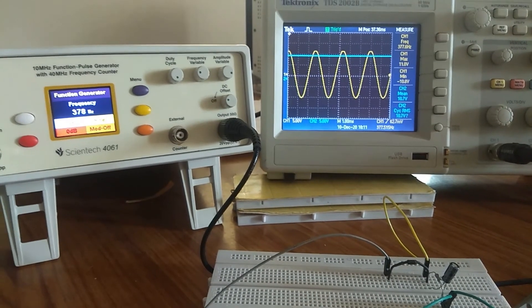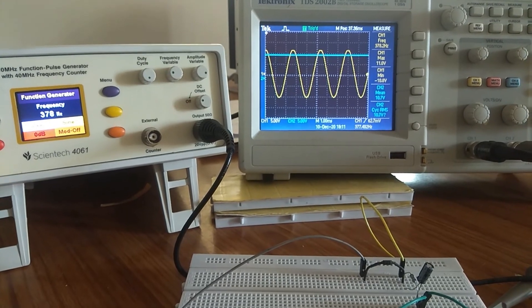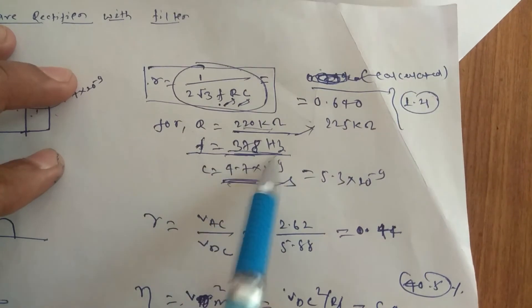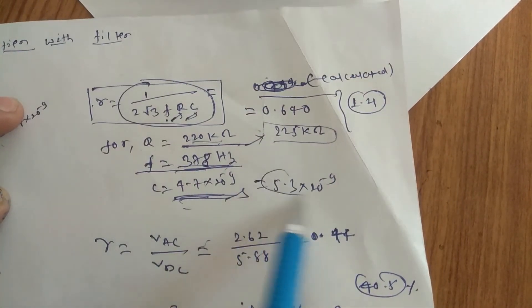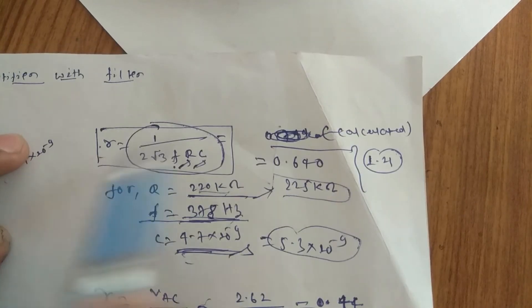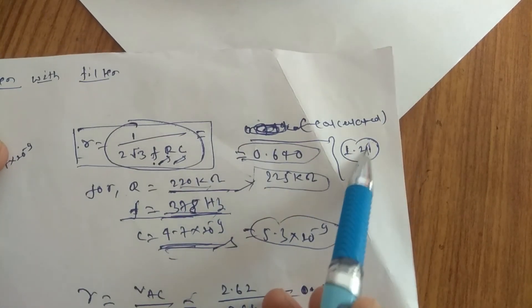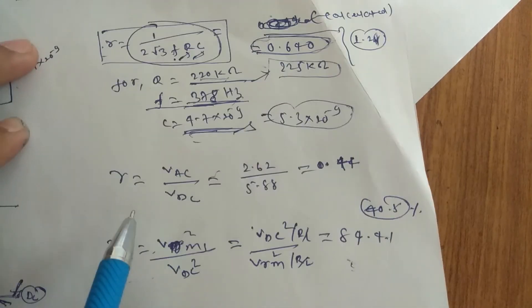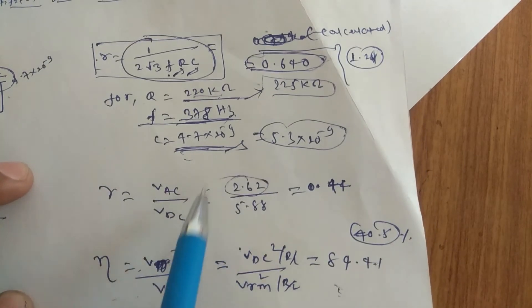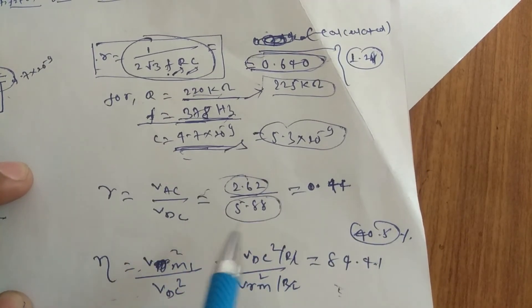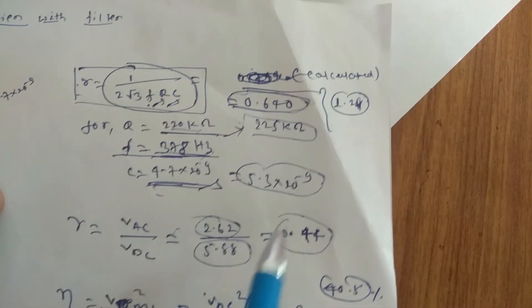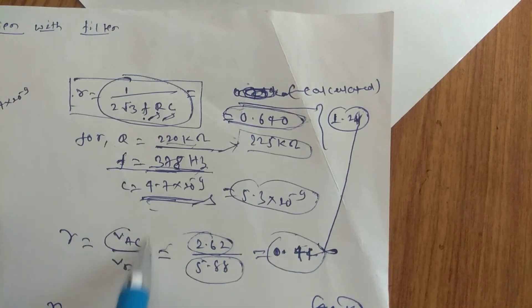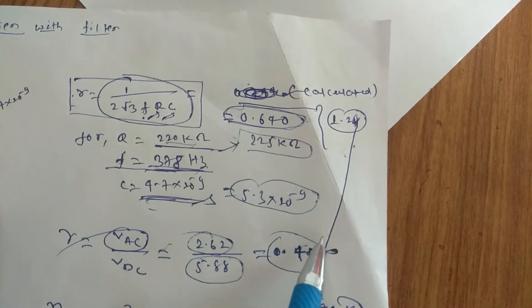This is all about the half wave rectifier with the filter. We have set the frequency to 378 Hertz. Actually with the rating, it was this one, but actually we got 225 kilo ohm and 5.3 nanofarad. By this formula, we calculated 0.64 and theoretically it was this one. Because of filter, it is coming to this one theoretically. But practically if you take VAC by VDC, VAC that we have taken from DSO and VDC is 5.88, it is 0.44. There is drastic change in ripple factor, means AC component is decreasing and this is because of filter.